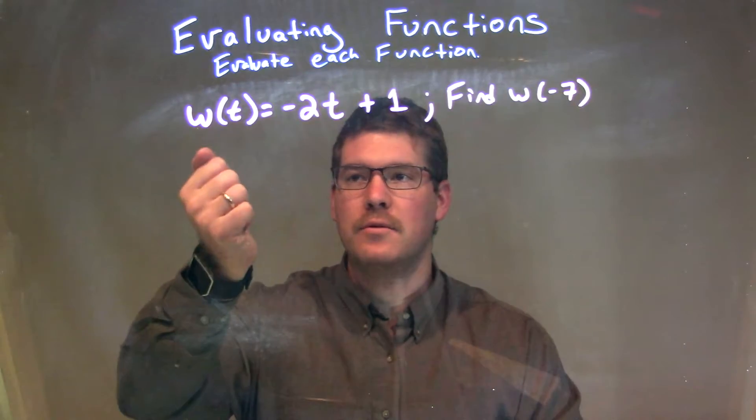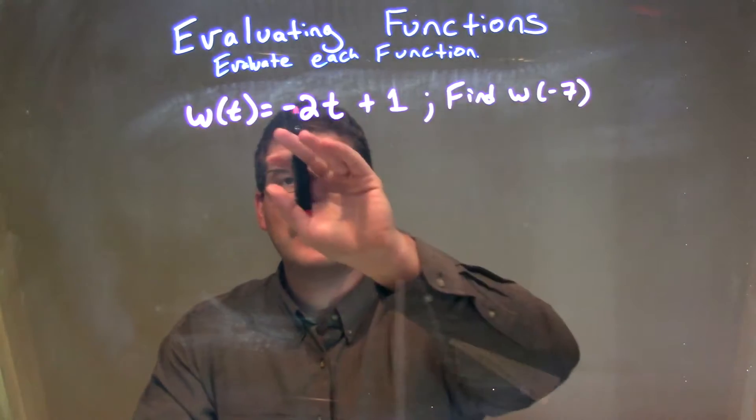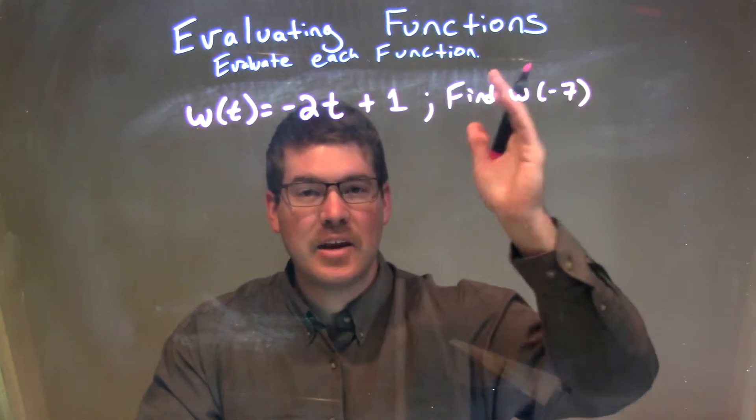I'm given my w(t), and I need to find w of negative 7. Every single time I see a t, I'm going to put in a negative 7.